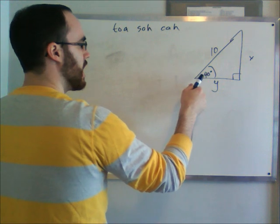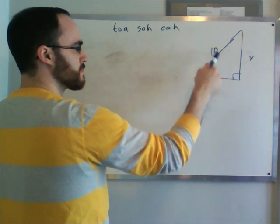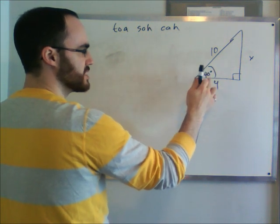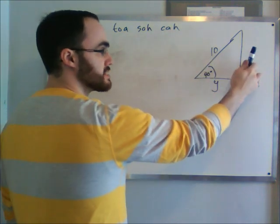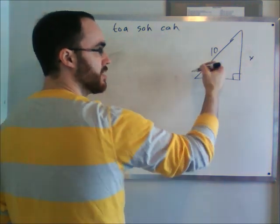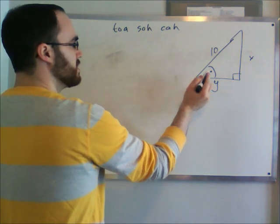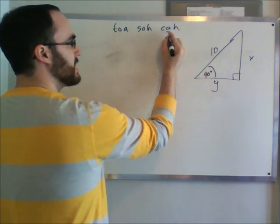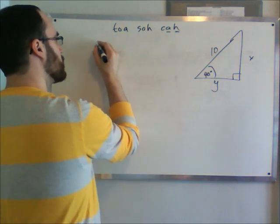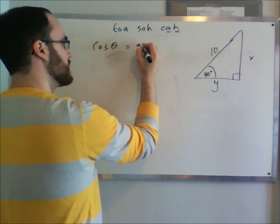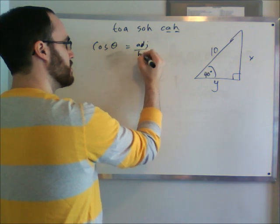So I'm going to have to use the hypotenuse and the adjacent side to the angle. The adjacent side is the one closest to the angle. The opposite side is away from the angle. And the hypotenuse is always the longest side of the triangle. So we need to use adjacent and hypotenuse. That is cos.